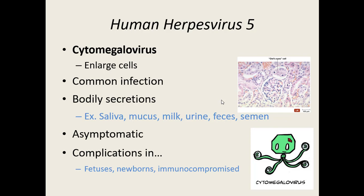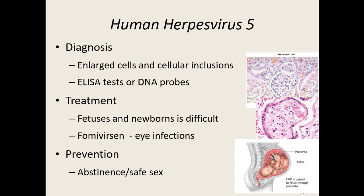When diagnosing cytomegalovirus, they look for those enlarged cells — which also have dark staining inclusions. These cells are nicknamed owl's eye cells because they're super large and usually have two big dark inclusions in them. For confirmation, they can do an ELISA or look specifically for the viral DNA. Treatment for fetuses and newborns is difficult because the damage is typically done before testing. If it shows up as an eye infection, there is a drug called fomivirsen which can slow the virus in the eyes, but we don't have a vaccine. For most individuals, asymptomatic.